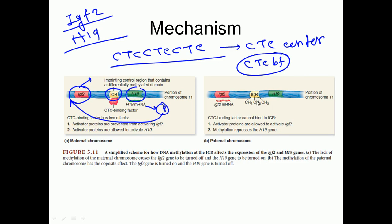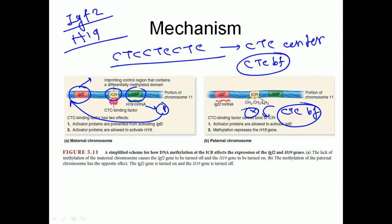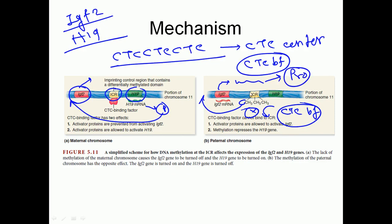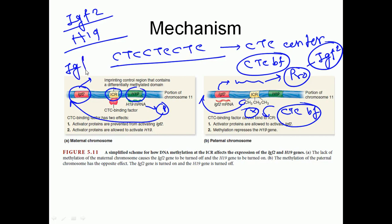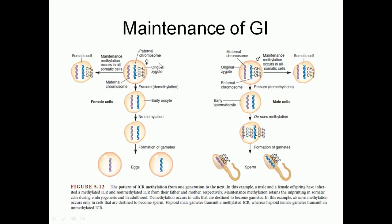So no IGF-2 in that scenario. But assume another situation where CTCF binding factor is unable to bind with ICR — in that case methylation is done. When methylation is done, CTCF binding factor will not be able to bind with the ICR region. As a result, H19 production is halted, and some other activator proteins will interact with this methylated component along with the promoter of IGF-2 to transcribe IGF-2 and produce the IGF-2 protein. The take-home message: if ICR gets methylated, IGF-2 will be expressed; but if ICR is non-methylated and blocked by CTCF, there will be IGF-2 minus — no expression.